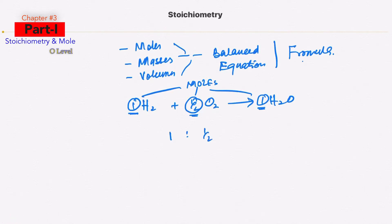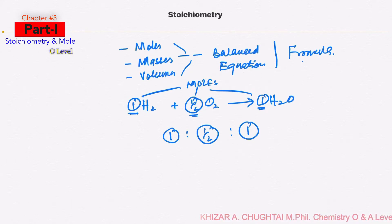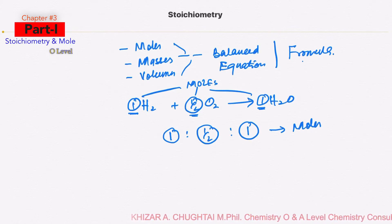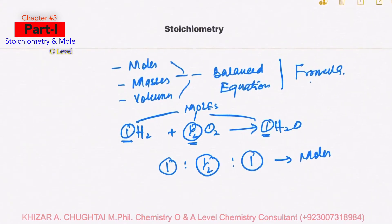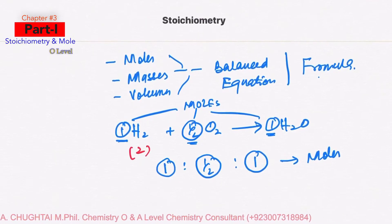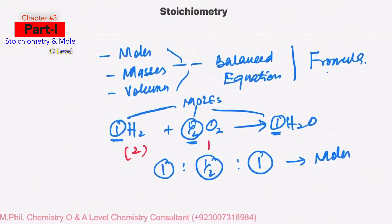This means that one mole of hydrogen is going to react with half a mole of oxygen for the complete reaction, and one mole of water is being formed according to this balanced chemical equation. This ratio is known as the mole ratio. We can also compare the ratio of different masses using the balanced chemical equation: 2 grams of hydrogen reacts with half times 32, that is 16 grams of oxygen.